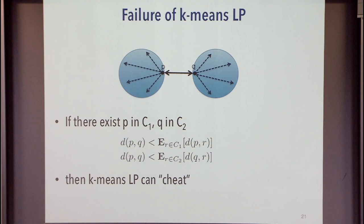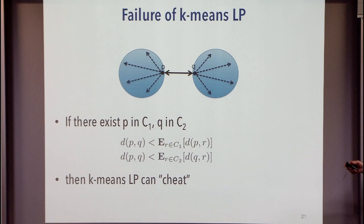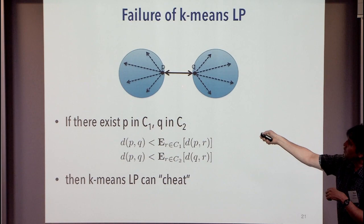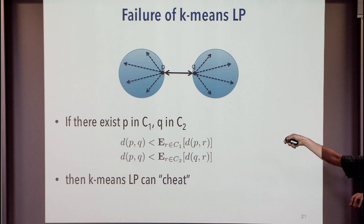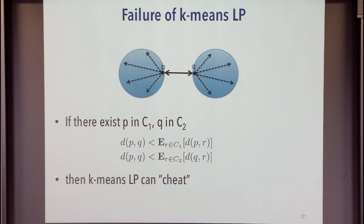Why does the k-means LP fail? For k-means, if you have two clusters that are close and there happen to be a pair of points P and Q such that their squared pairwise distance is less than the average distance of P to points in its cluster plus the average distance of Q to points in its cluster, there's an opportunity for this LP to cheat. It places some weight on this edge and subtracts a little from all the other edges. The SDP cannot cheat in this way — it needs at least half of the clusters to share something, so it's much more robust.